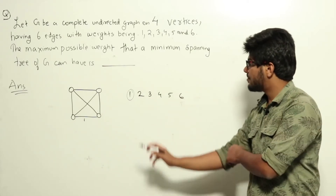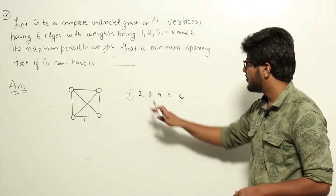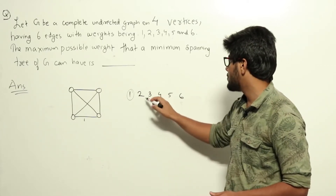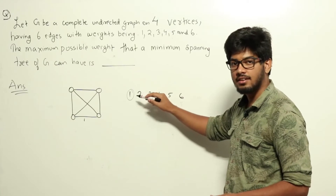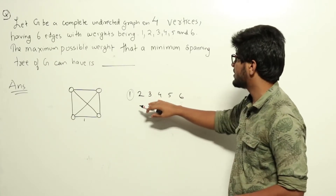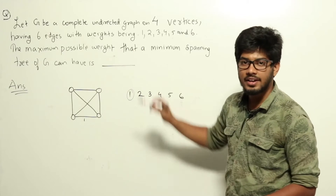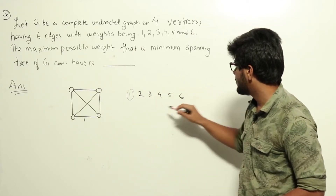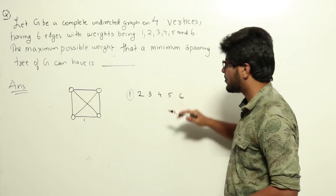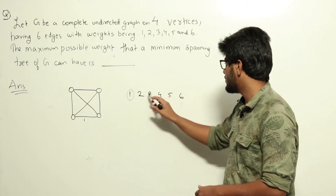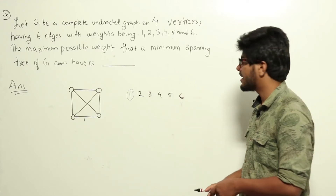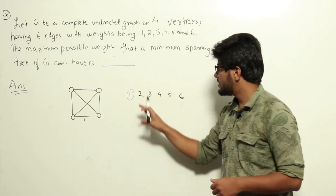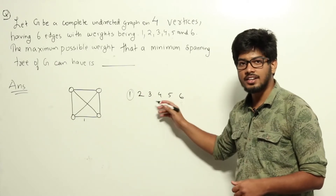Now let us see if edge 2 will always be selected. What I am trying to achieve here is to somehow avoid a smaller weight so that a larger weight will be selected, maximizing the total MST weight. I am trying to avoid some edge when sorted, so I can later choose a bigger edge. Edge 2 can only be avoided if it connects two nodes already in the current minimum spanning tree.